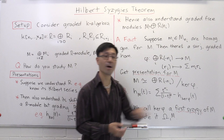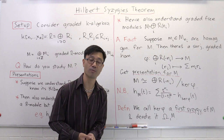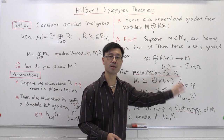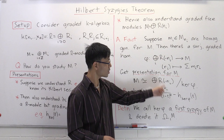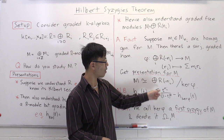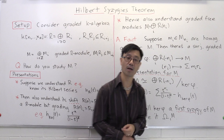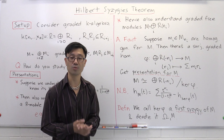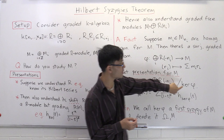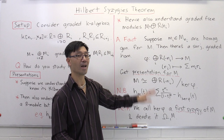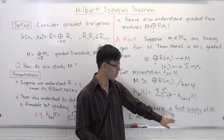Suppose you're interested in finding the Hilbert series of the graded module M. Since M is a quotient, the Hilbert series of M equals the Hilbert series of the graded free module — which is Σ t^{n_i}/(1 − t)^d — minus the Hilbert series of the kernel of φ. So once you know this kernel and its Hilbert series, you know the Hilbert series of M as well. We call the kernel of φ a first syzygy of M, denoted Ω₁(M) — the 1 for first syzygy.